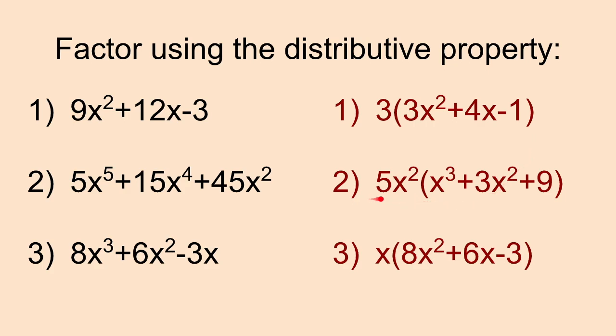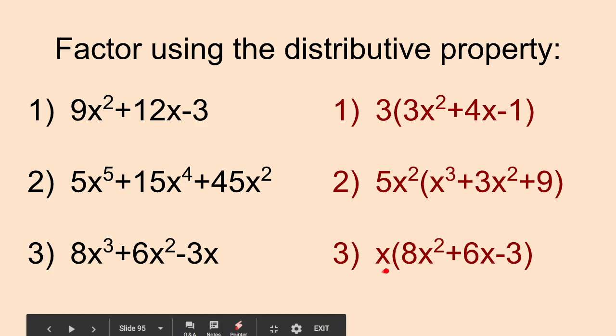For number two, we can factor out a five from each term, and we can also factor out an x². When we do that, we're left with 5x²(x³ + 3x² + 9). And for number three, the only thing we can factor out is an x. We don't have to factor out a number, because in this case, there's nothing that can go into 8, 6, and negative 3. The only thing that we can factor out is this x. And when we factor out the x, we're left with x(8x² + 6x - 3).